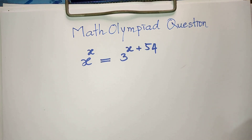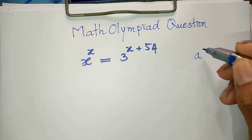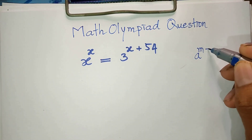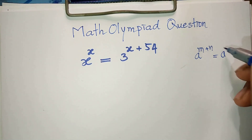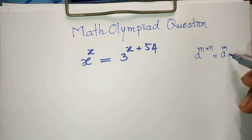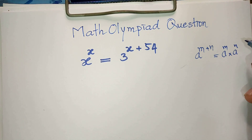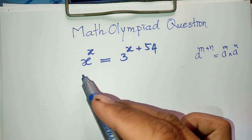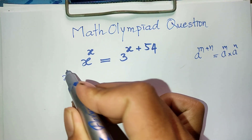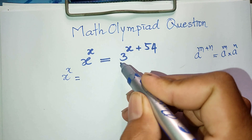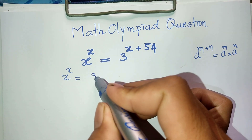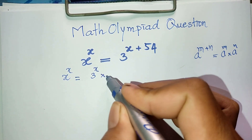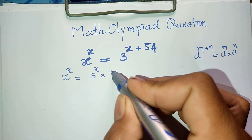I'll use the rule that a to the power m plus n equals a to the power m multiplied by a to the power n. So 8 to the power 8 can be written as 3 to the power 8 multiplied by 3 to the power 54.